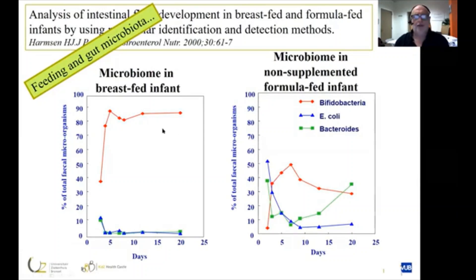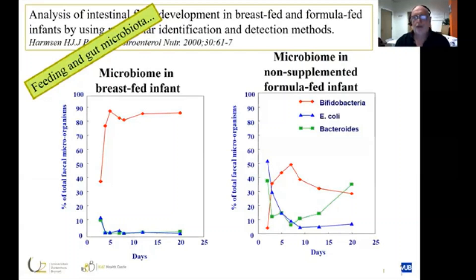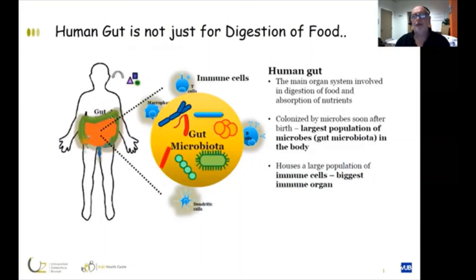The microbiome development in a breastfed infant is predominant with bifidobacteria and very few coli and bacteroidetes. In formula-fed infants, in a formula not supplemented with any pre- or probiotics, it is still predominantly bifidobacteria but at a much lower content, and much more coli and bacteroidetes. The microbiome development in formula-fed infants is totally different from that in breastfed infants, and this is very important for the development of the immune system.